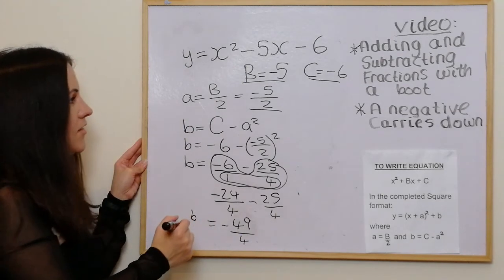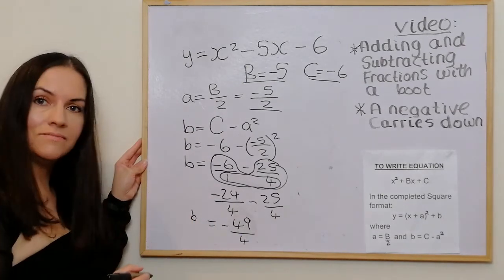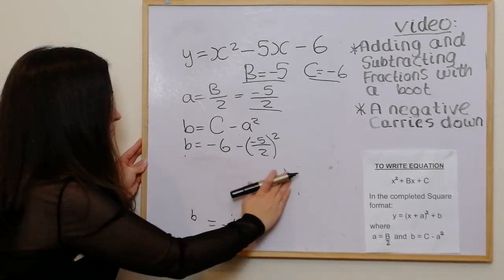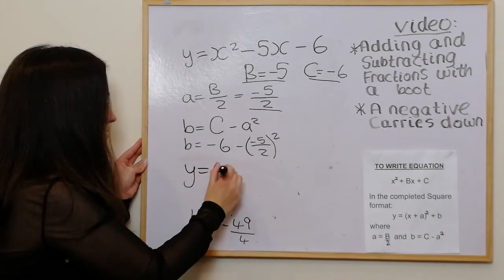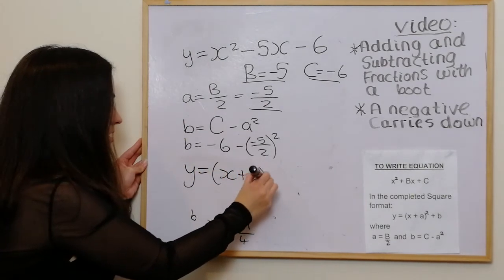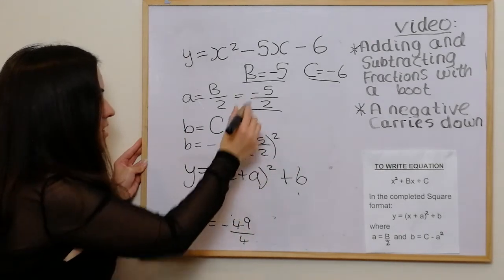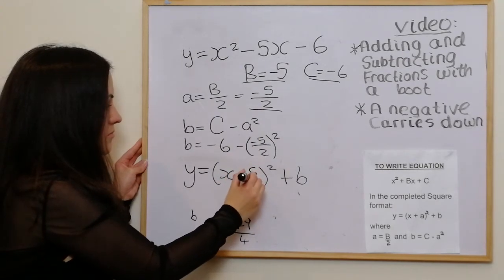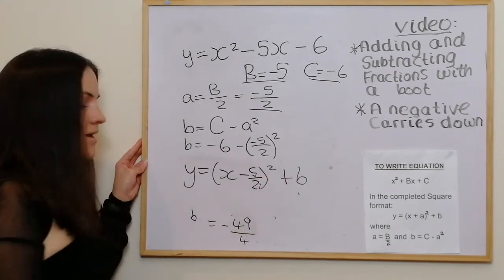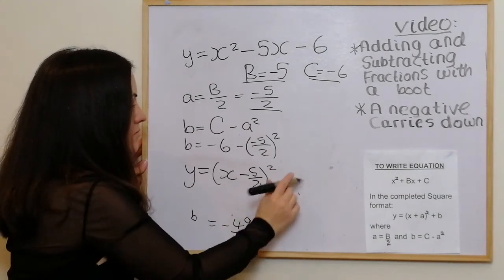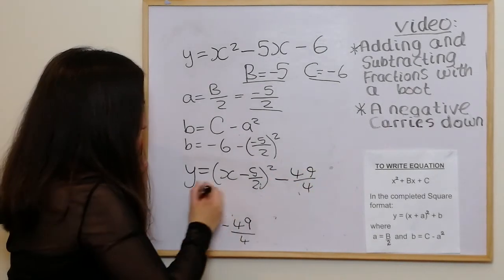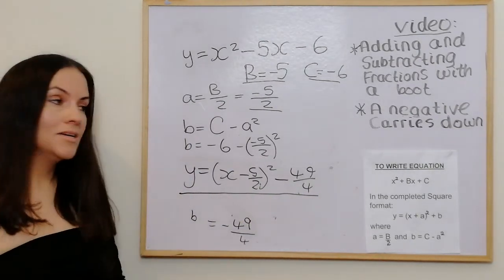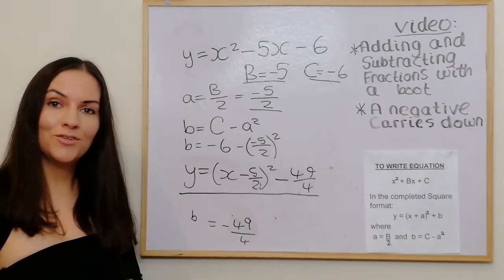So b is minus 49 over 4. Writing out the equation in y equals (x + a)² + b format: a is minus 5 over 2, carrying that negative down, and b is minus 49 over 4. I hope this has been helpful. Please like, please subscribe, and please suggest any other maths videos you'd like to see in the near future.